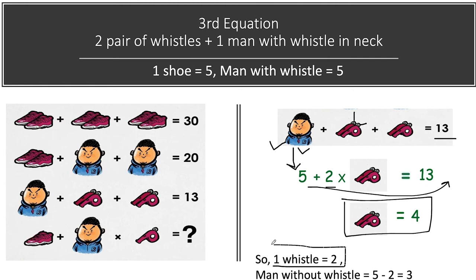If 2 whistles equal 4, then one whistle value is 2. Since man with a whistle equals 5 and one whistle equals 2, we subtract: 5 minus 2 gives us the value of a man without a whistle, which equals 3. One whistle value is equal to 2.